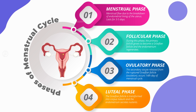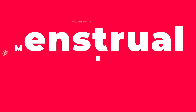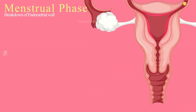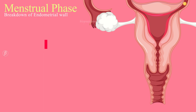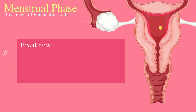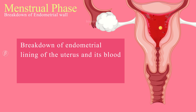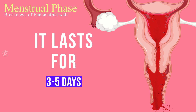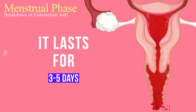Menstrual phase — breakdown of the endometrial wall. Menstruation occurs only when the egg is not fertilized. The breakdown of the endometrial lining of the uterus and its blood vessels forms a liquid that comes out through the vagina along with the unfertilized egg. This process is known as menstruation. It lasts for three to five days, and lack of menstruation may be indicative of pregnancy.